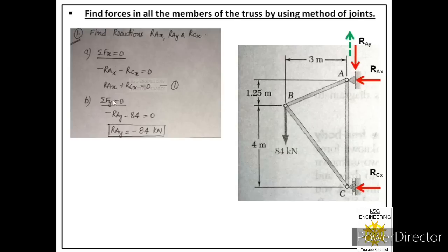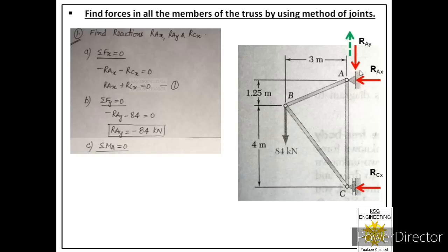From the second equation we found RAY. Now we apply the third equation: moment about any point must equal zero. We consider moment about joint A because maximum forces act there, making the equation simpler. The moments due to RAX and RAY will be zero since they pass through joint A, leaving only moments due to RCX and 84 kN.